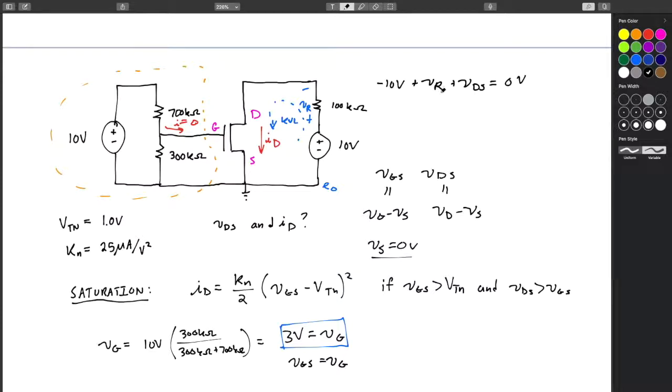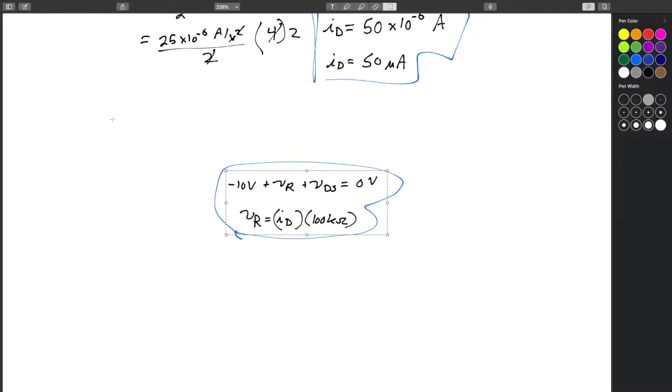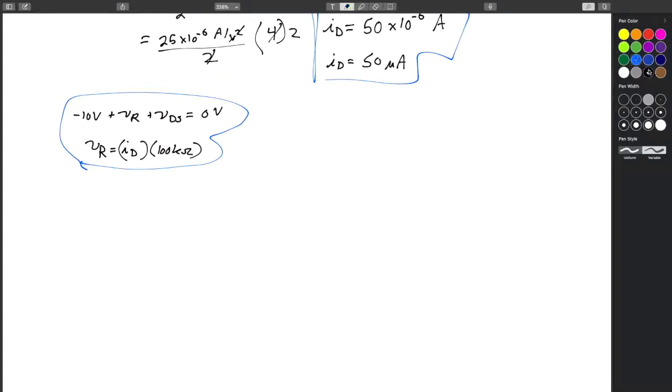And we can say, okay, so now we have this expression, VR we don't know, but we can say VR will actually equal ID times 100K. And this is good because now we can actually just, I'm going to take this down below so we can keep working with it. Good. We can then substitute that stuff in. So let's move a couple things around.